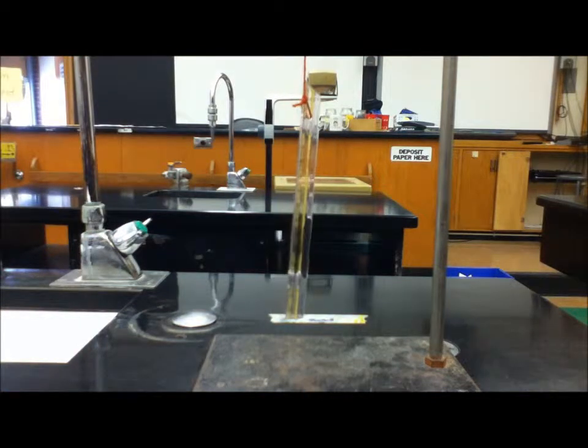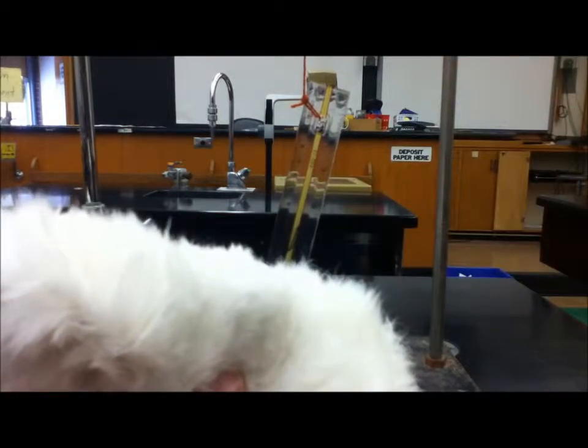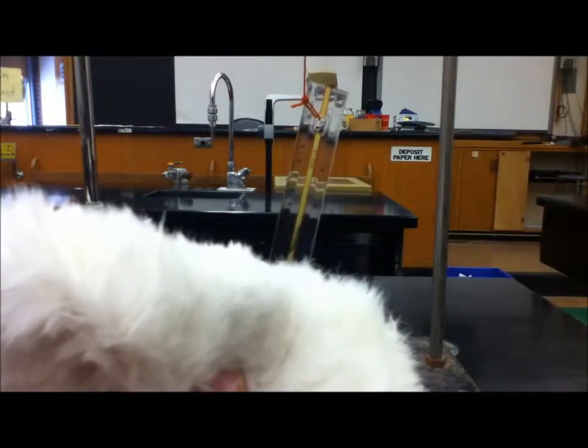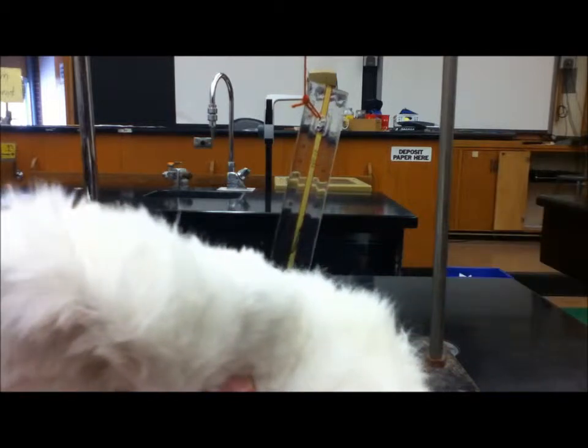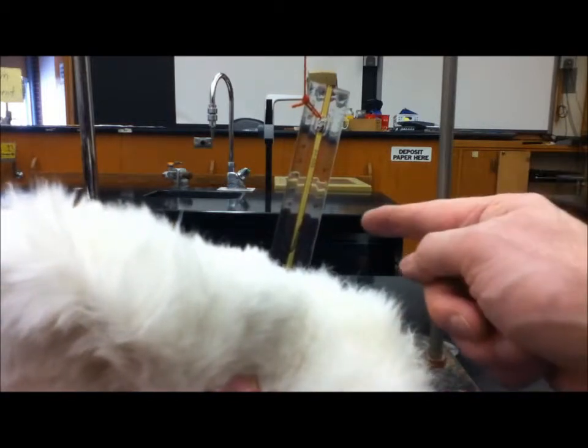And what you have to kind of think about is what's being transferred from the fur to the ruler, especially if the ruler ends up getting a negative charge. What's being transferred from here to there in order for the ruler to get a negative charge?